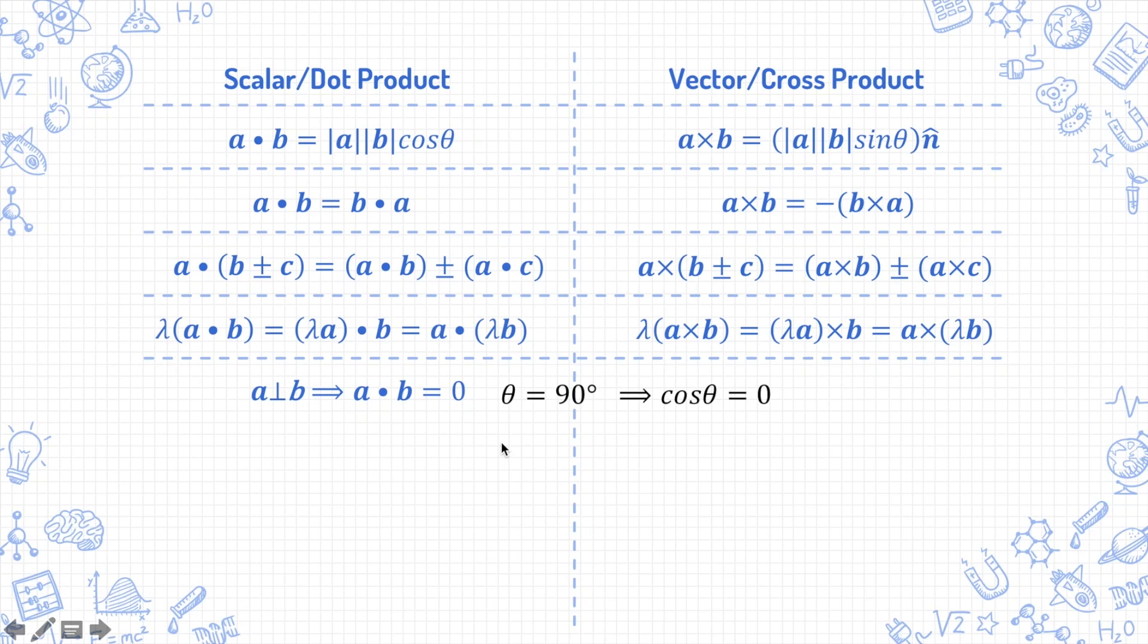And you need to be flexible enough to also see that, for example, if a dot b minus c equals 0, it means that either a is perpendicular to b minus c or a is the zero vector or b minus c equals the zero vector, which means b equals c.